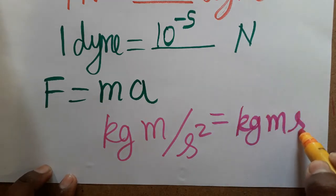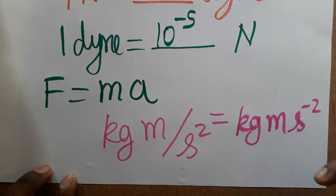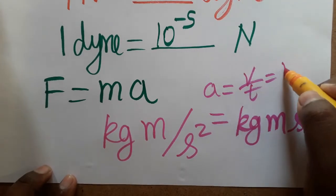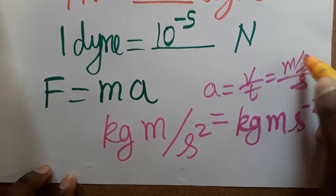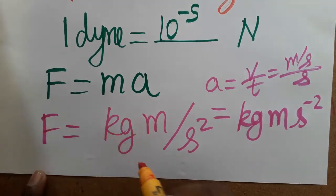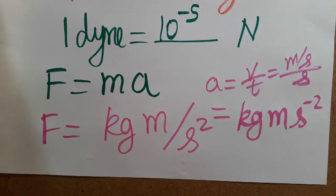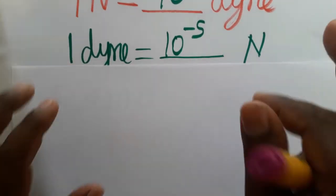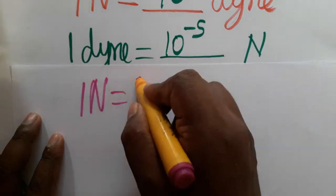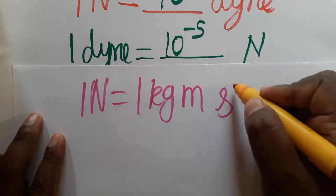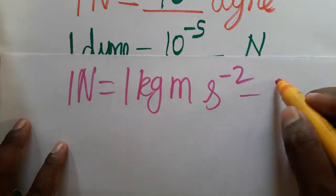So force equals kg·m·s⁻². Acceleration is meter per second squared, so force SI unit is kg·m·s⁻². Since this is the SI unit, we call it a newton. Therefore, 1 newton is equal to kg·m·s⁻².